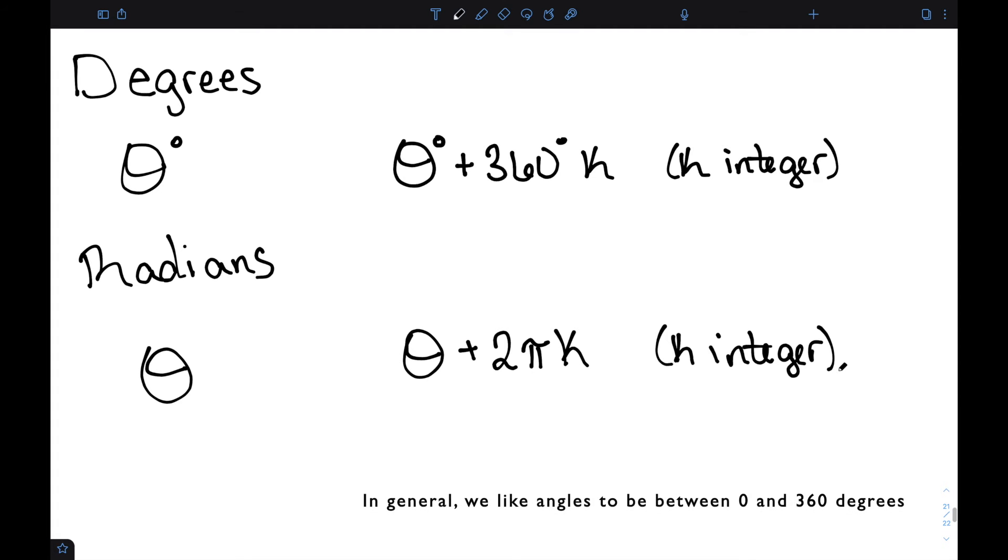In general, we like angles to be between 0 and 360 degrees. So most of the time whenever we have these coterminal angles, we use these ideas to move them to an angle between 360 degrees and 0.